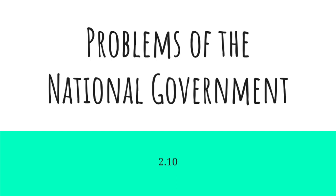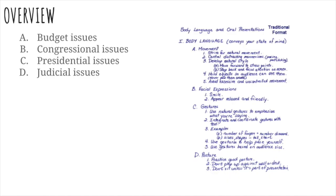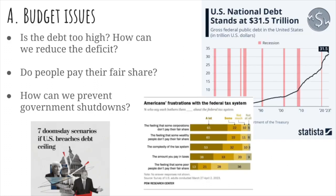Hello scholars, this is Mr. Myers doing Lesson 2.10, Problems of the National Government. Make sure you take good structured notes over our objectives. We'll be looking at issues related to the budget, Congress, the presidency, and the judicial branch.